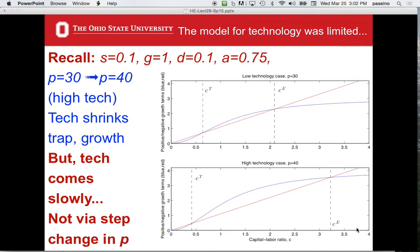In the previous lecture, we had a change in P from 30 to 40, remembering that P represented the quality of technology that helped people make money. It was SPF of C. We studied the impact of going from low technology to high technology.